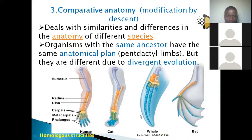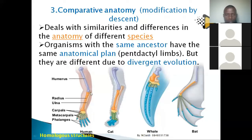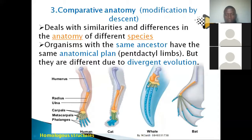Most vertebrates have almost the same anatomical plan, which shows they came from the same ancestor but diverged into different areas — this is called divergent evolution. Starting from the same ancestor, each organism modified itself for different functions: a cat modified to capture prey, a whale modified for swimming, and a bat modified for flying.